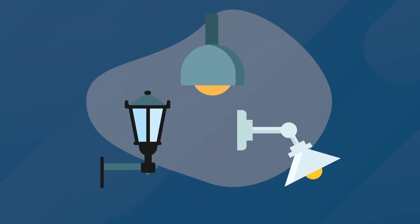A lighting fixture is a decorative housing for the lamp, including any optical improvements such as diffusion or lenses, and any required electrical or electronic components needed to make the lamp function. In a commercial lighting plan, these fixtures are grouped together by their purpose, such as general lighting, accent lighting, and task lighting.